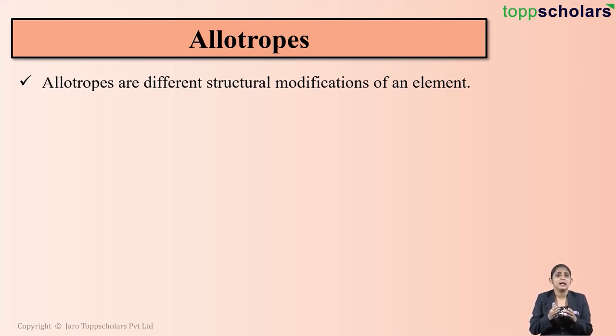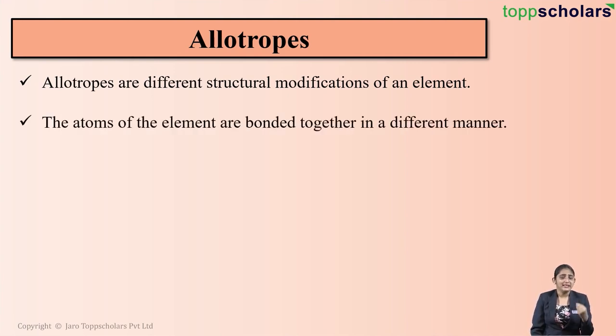In simple terms, we can say that allotropes are the different structural modifications of an element. Why different structural modifications? Because these allotropes are different in their structures as compared to their other allotropes. This is because the atoms are arranged in a different manner.